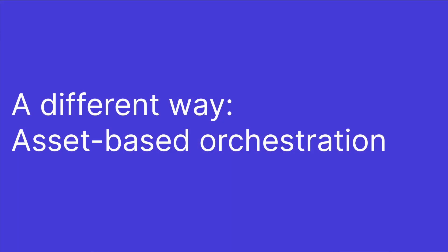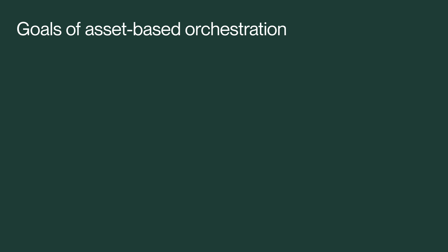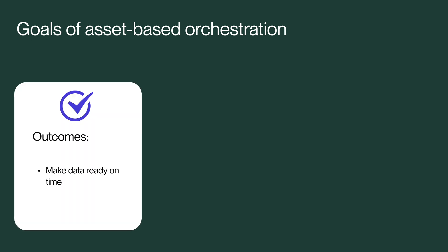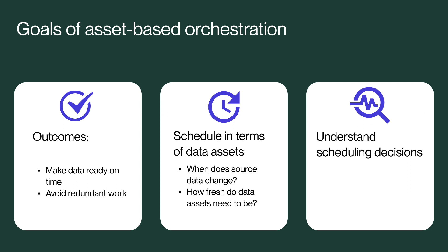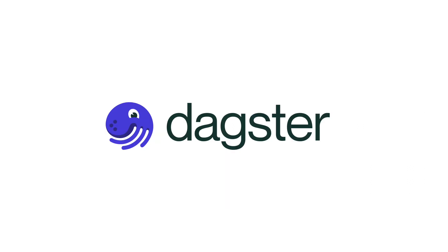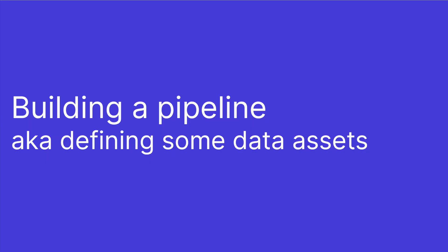So imagine we could throw out workflow engines and design an approach from the ground up for orchestrating data pipelines. Our ideal orchestration system has a few goals: we want data to be ready when it's needed and avoid redundant work; we'd like to express scheduling in terms of data assets, since asset requirements are the main determinants of when computations should run; and we want to understand and debug scheduling decisions. We're going to explore this through Dagster, an open source data orchestrator that views data pipelines in terms of data assets.